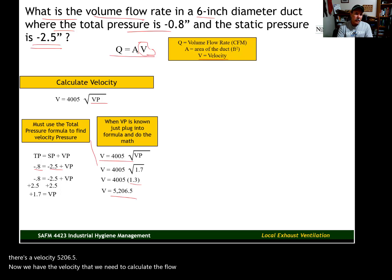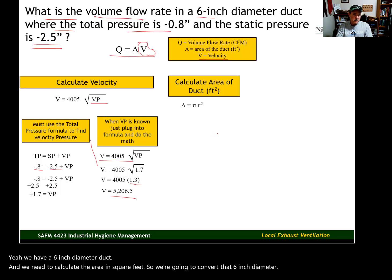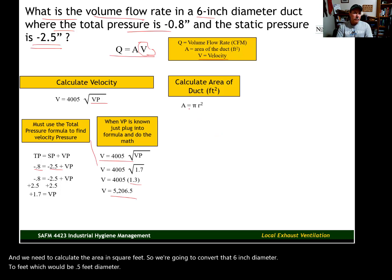But we still need to calculate the area. We have a 6-inch diameter duct. And we need to calculate the area in square feet. So we're going to convert that 6-inch diameter to feet, which would be 0.5 feet diameter. The formula for area is pi r squared, radius squared.